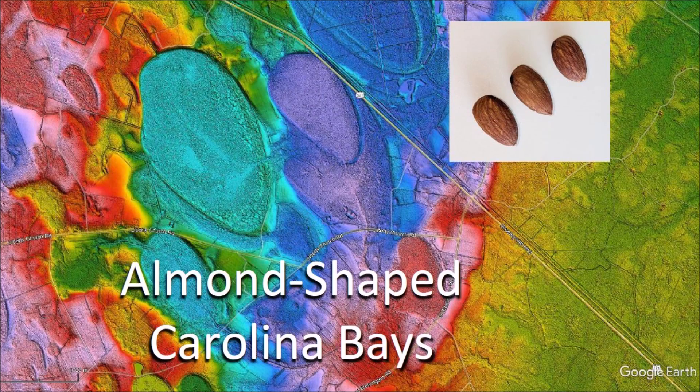Welcome to another episode of the Carolina Bay of the Day, where we discuss the basins made by the secondary impacts of glacier ice ejected by an extraterrestrial impact on the Laurentide Ice Sheet.